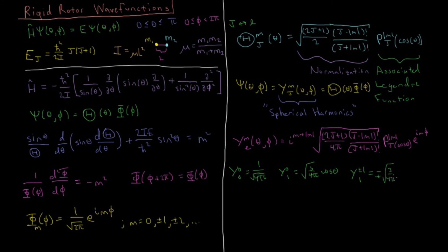Square root of same constant, 3 over 4 pi, then sine of theta, and m equals 1 because I have an m value of 1 up here or minus 1. So that's e to the plus or minus i phi.